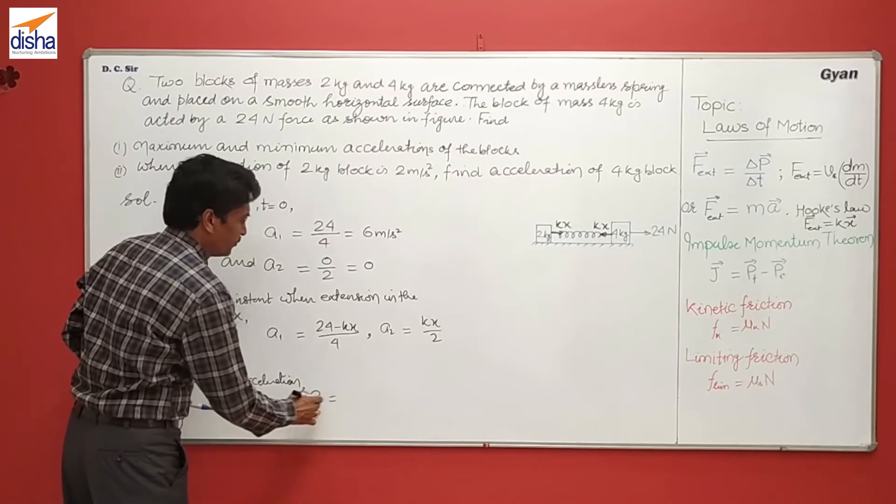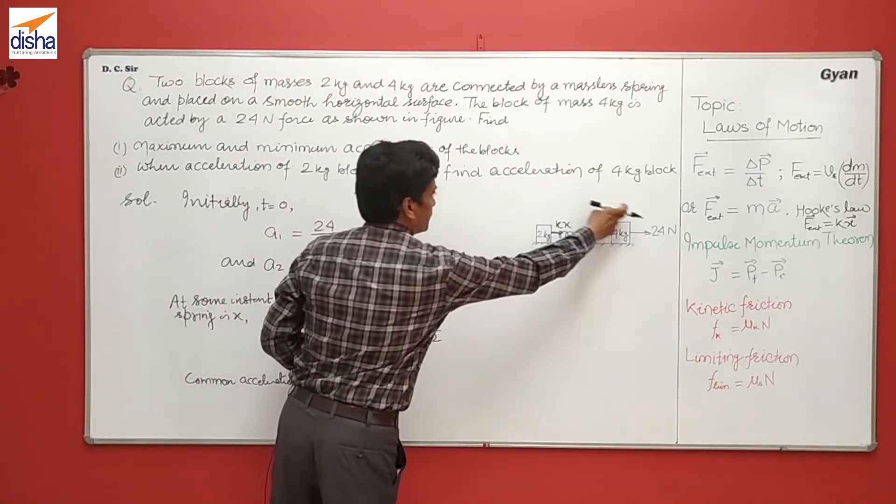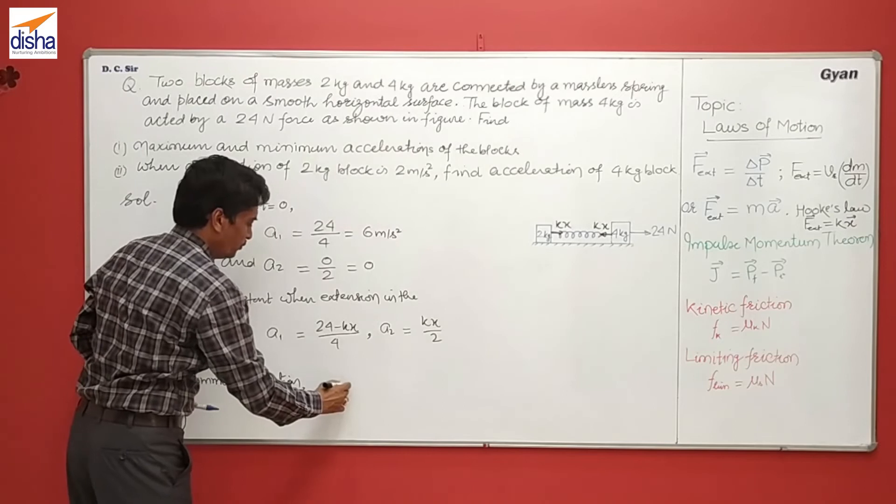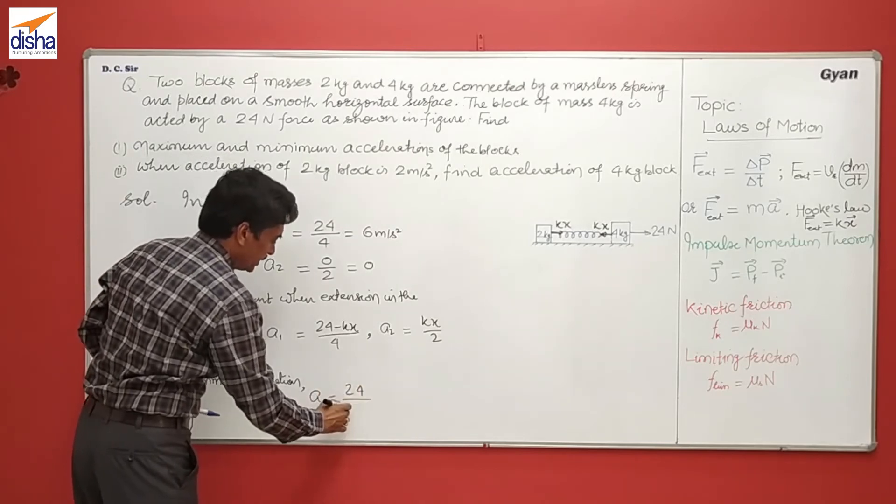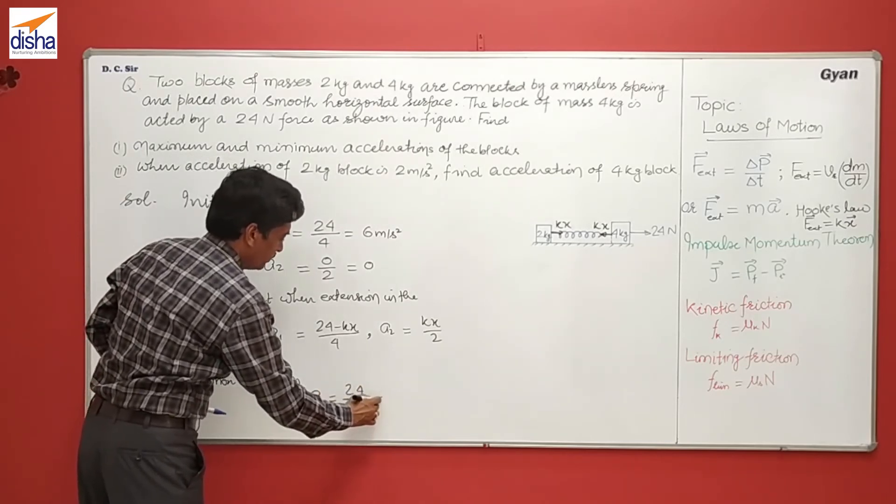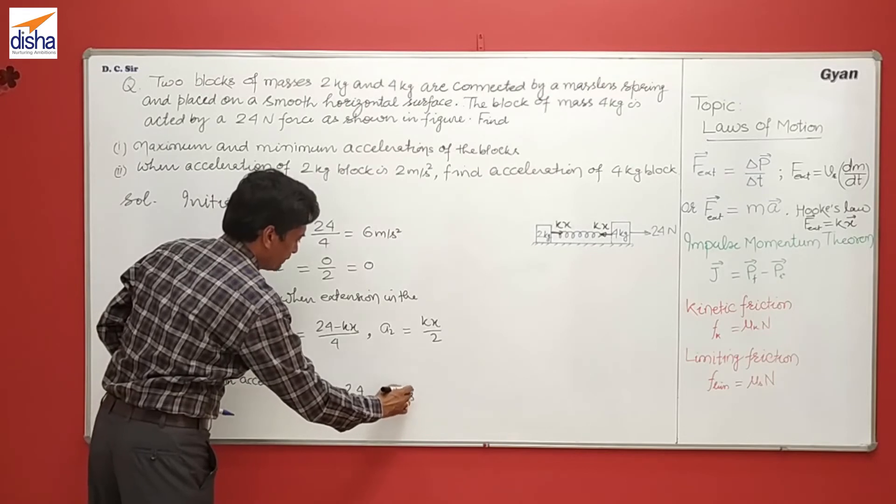A equals the net force on the system together. This is the net force of 24 N divided by total mass, that is 2 plus 4. It will be 4 meter per second squared.